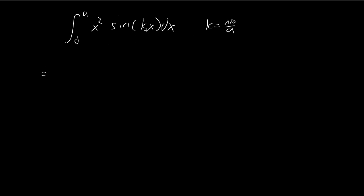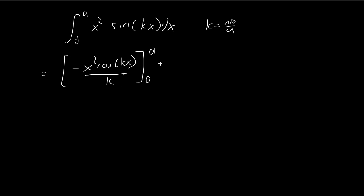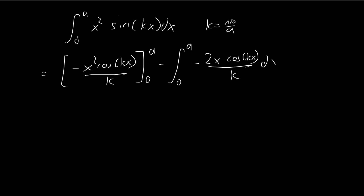We can solve this using integration by parts, and we need to do it two times because of the x squared. So we integrate sine kx — it just becomes negative cosine kx divided by k, evaluated from 0 to a, minus 0 to a. And then we differentiate the x squared, which just becomes 2x dx.